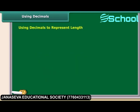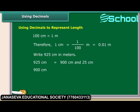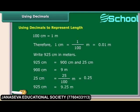Similarly, length can also be expressed in decimals. We know that 100 centimeters are equal to one meter, so one centimeter is equal to one-hundredth of a meter. 925 centimeters may be split as 900 centimeters and 25 centimeters. 900 cm equals 9 meters; 25 cm equals 0.25 meters. So 925 centimeters are equal to 9.25 meters.